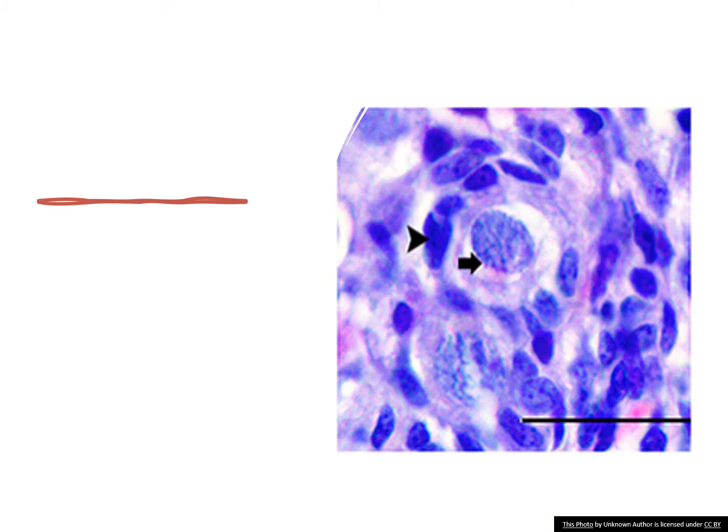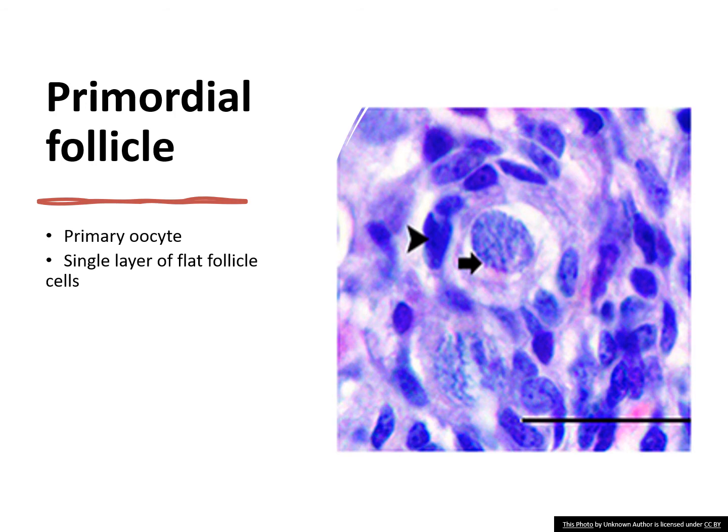What about this? What kind of follicle is this? The arrow is actually pointing at a primary oocyte. This is a primordial follicle that contains a primary oocyte surrounded by a single layer of flattened follicular cells.